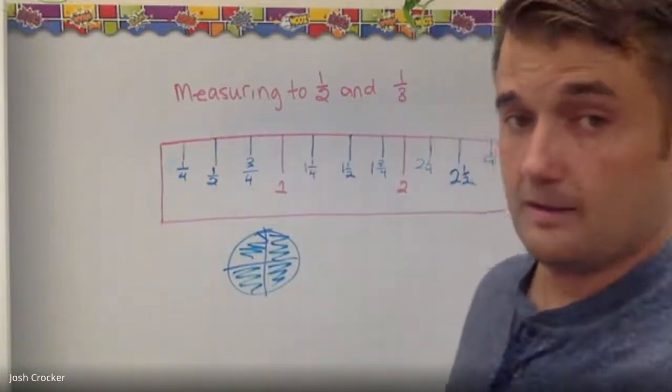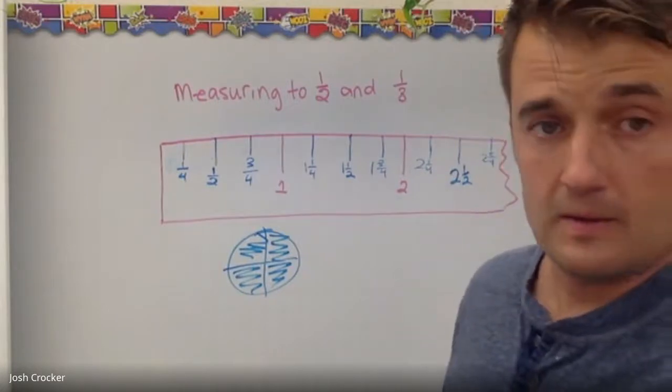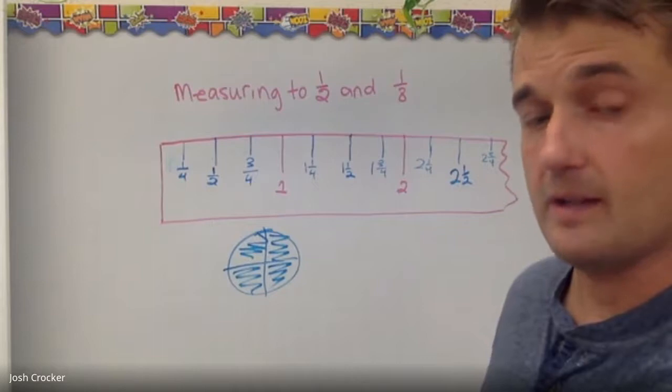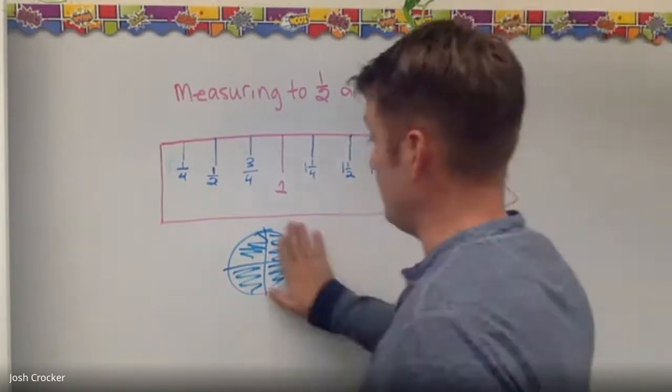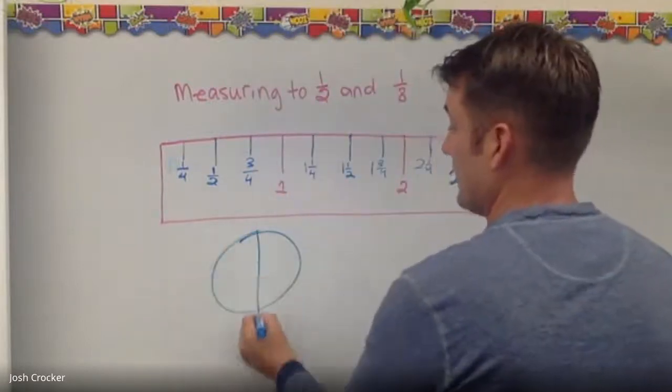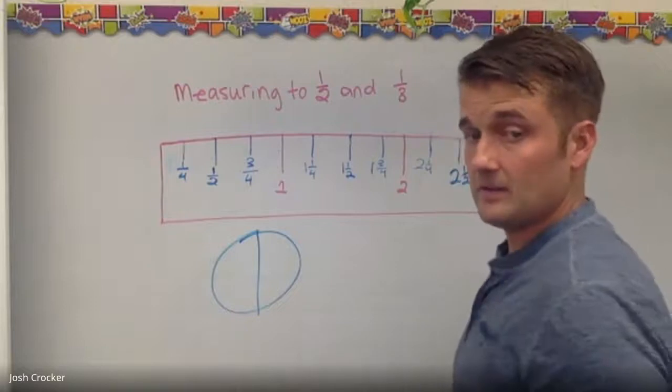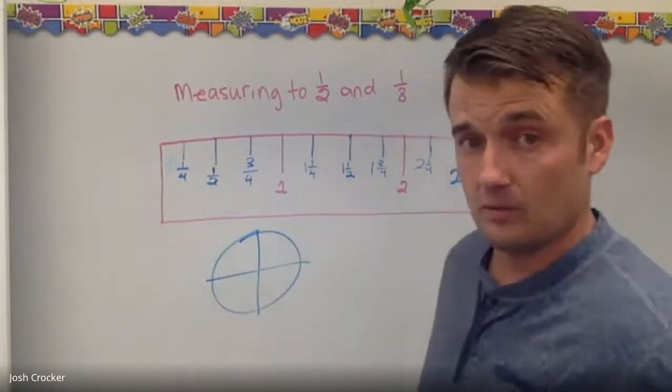Okay, if we keep going into smaller and smaller pieces, we're going to get into eighths and eventually sixteenths. So same thing with the pizza. All right, here's my pizza. We've got halves. We cut halves up. Those are now fourths—four pieces.